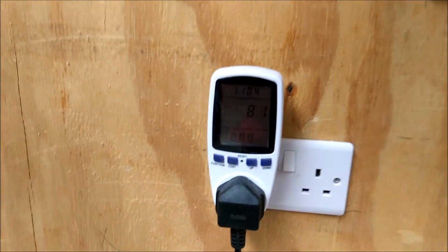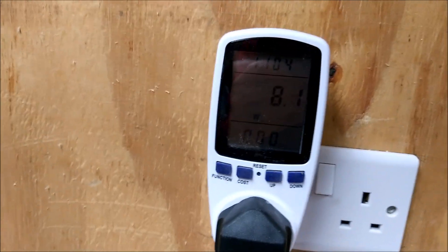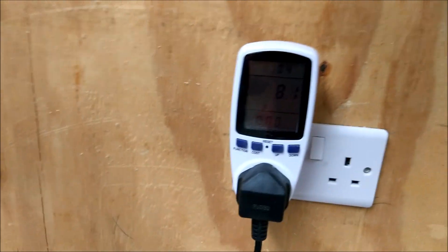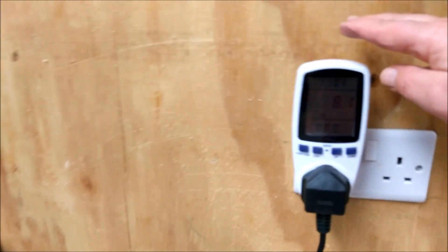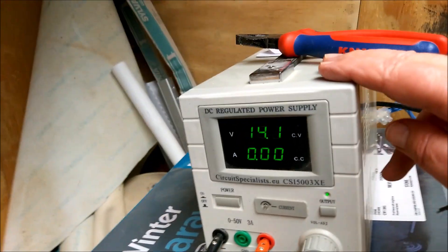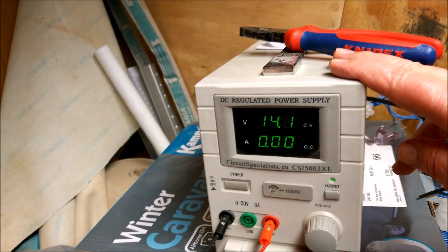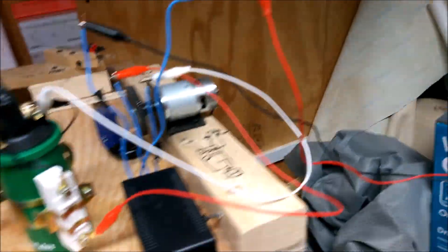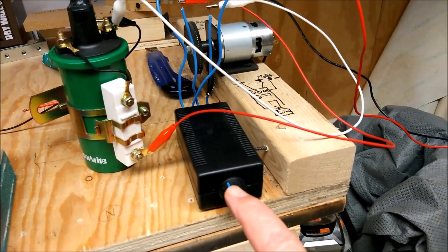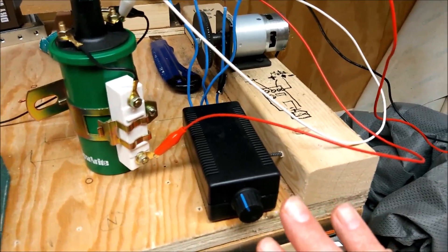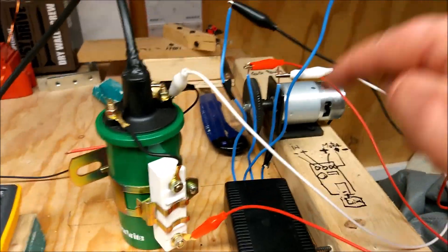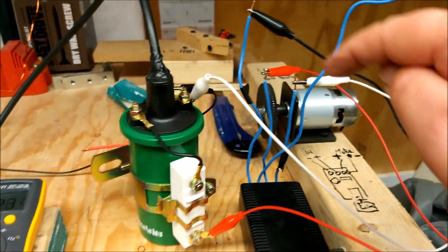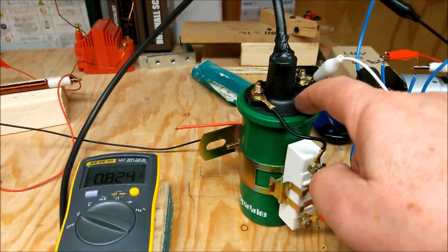Without any further ado, we'll go over to the bench. The setup is here. I've got a little watts control unit here, or monitor, and we've got the regulated DC power supply set at about 14 volts, and I've got my frequency generator here.